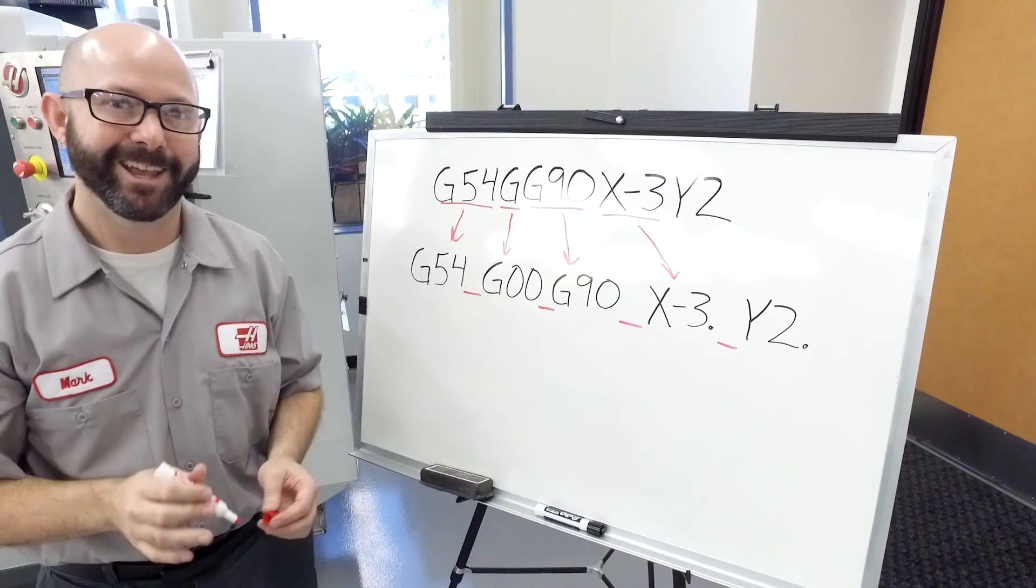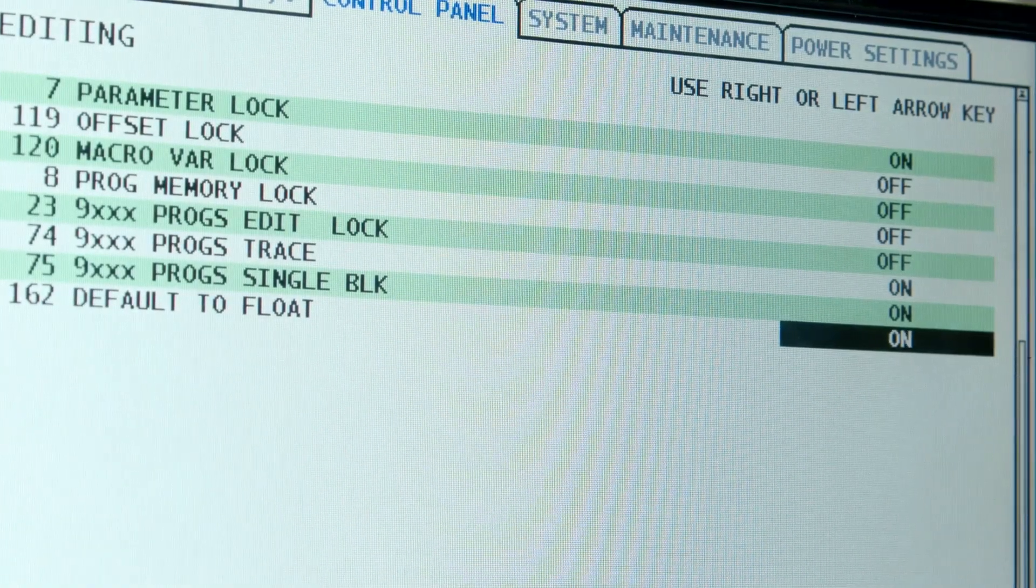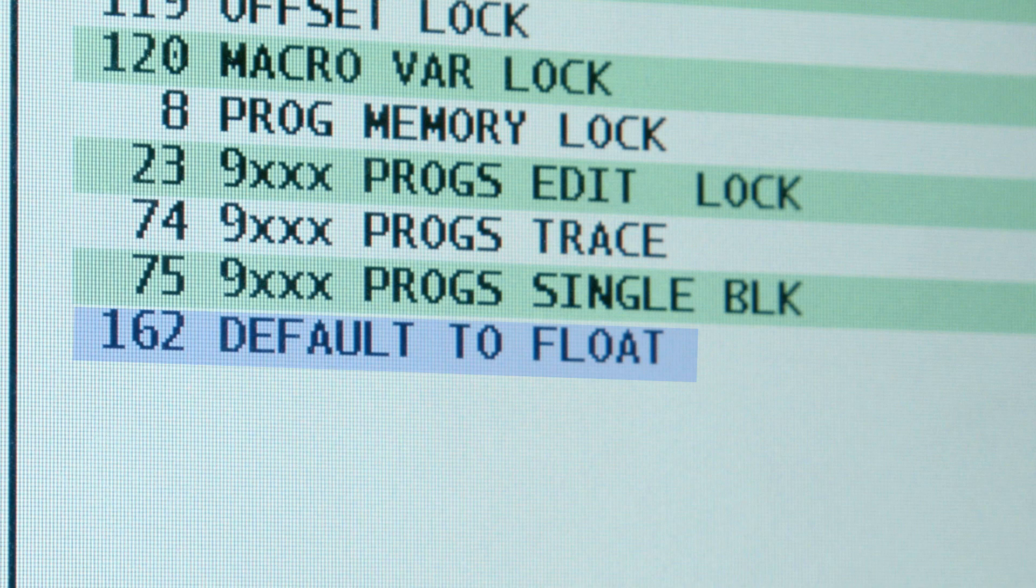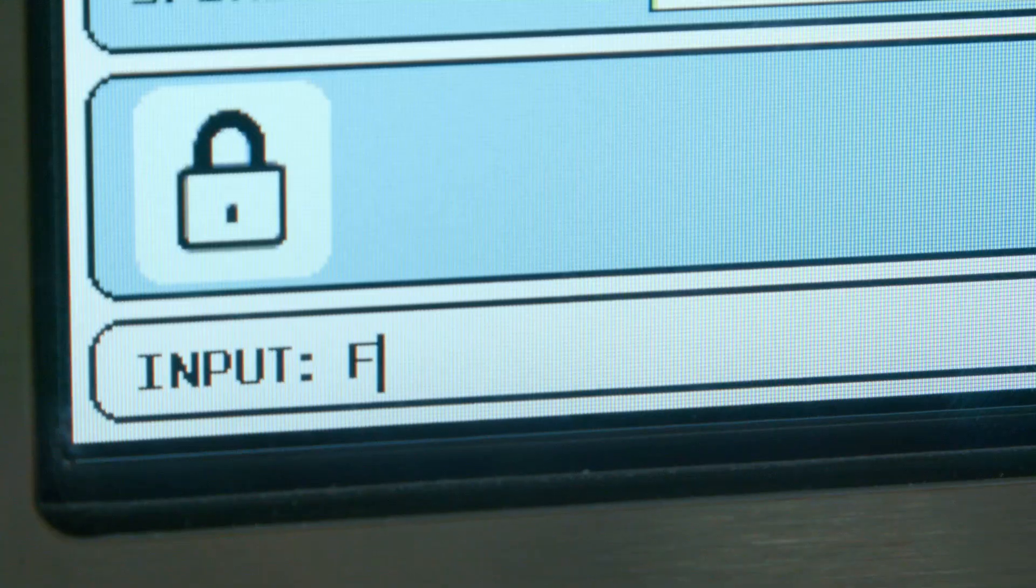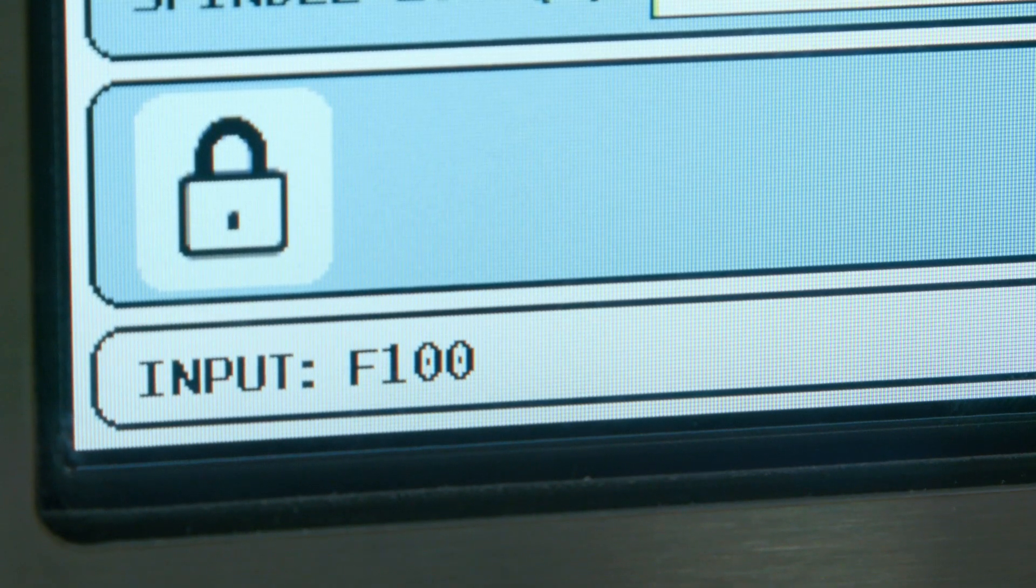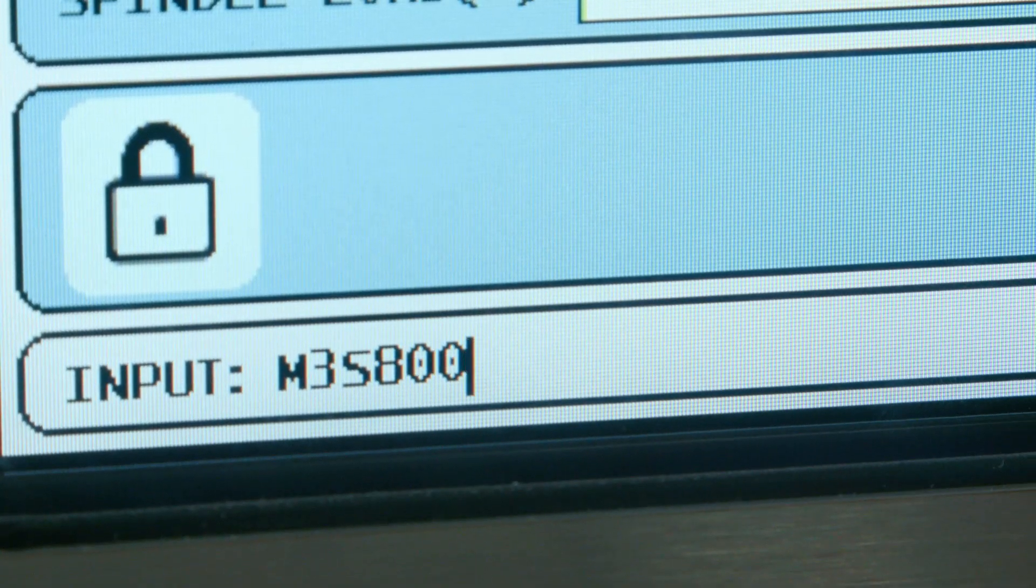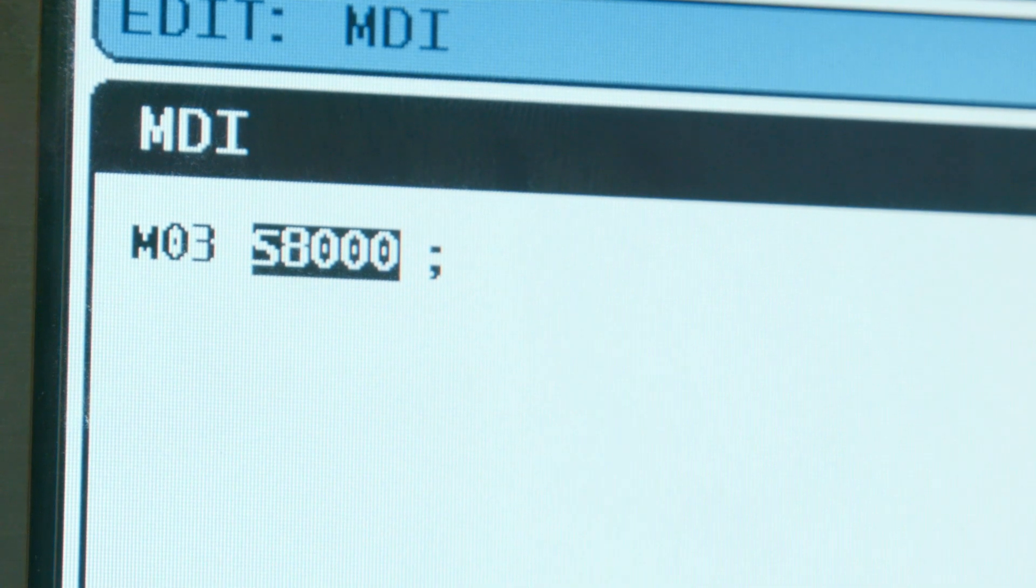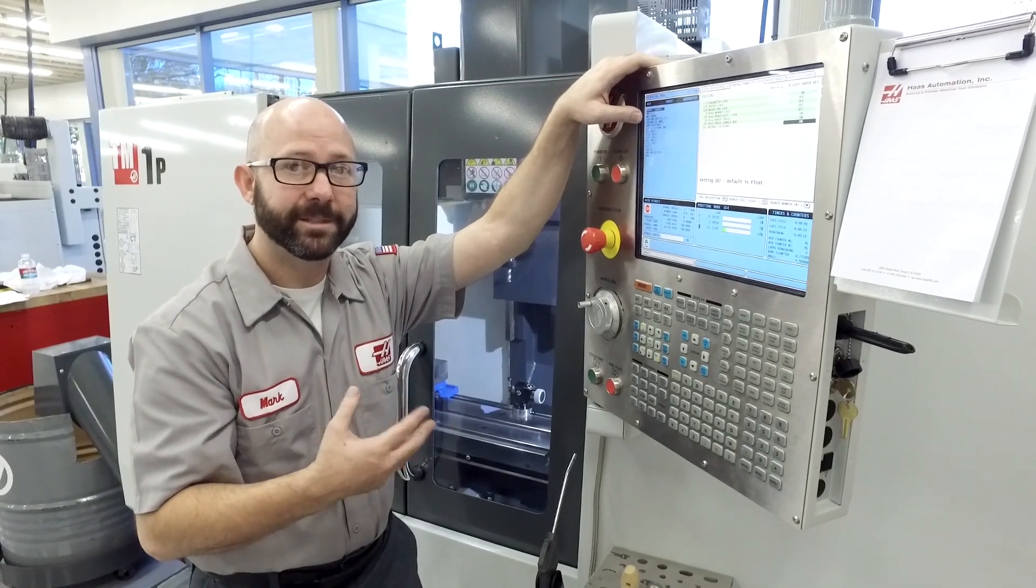Right here we cheated a little bit, and I'm going to show you how to cheat as well. We turned on setting 162, default to float. This adds decimal points to our code as we enter it when appropriate. In my program, I entered F100 and it shows up on my screen as F100 decimal point. I also entered S8000 and it left it alone, because the control is smart enough to know that S codes don't require decimal points.